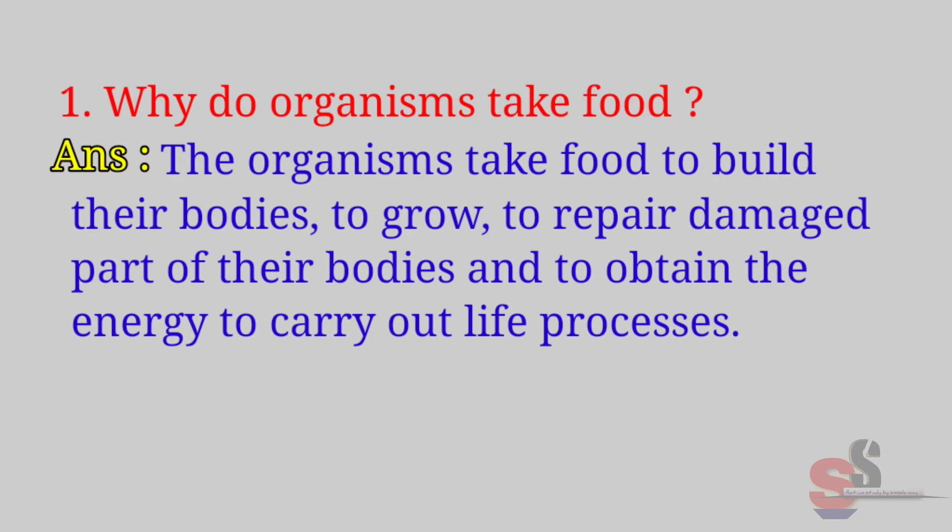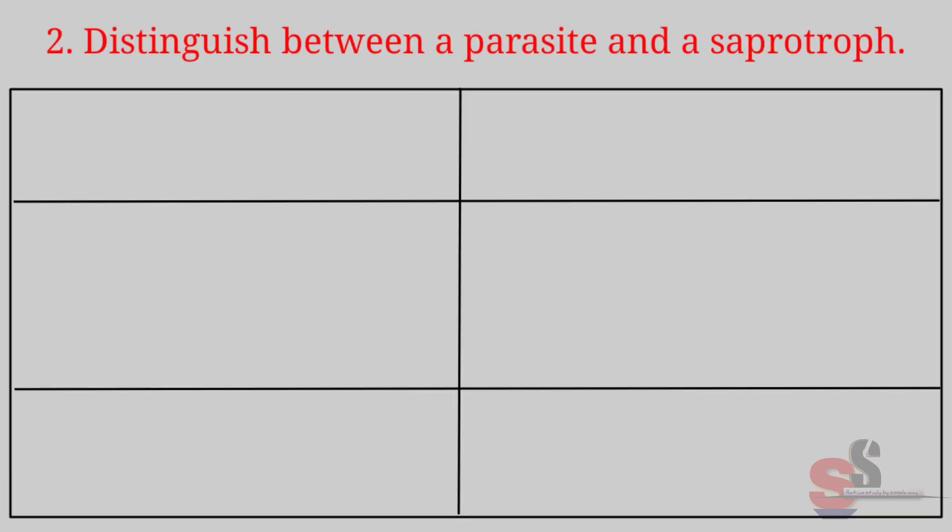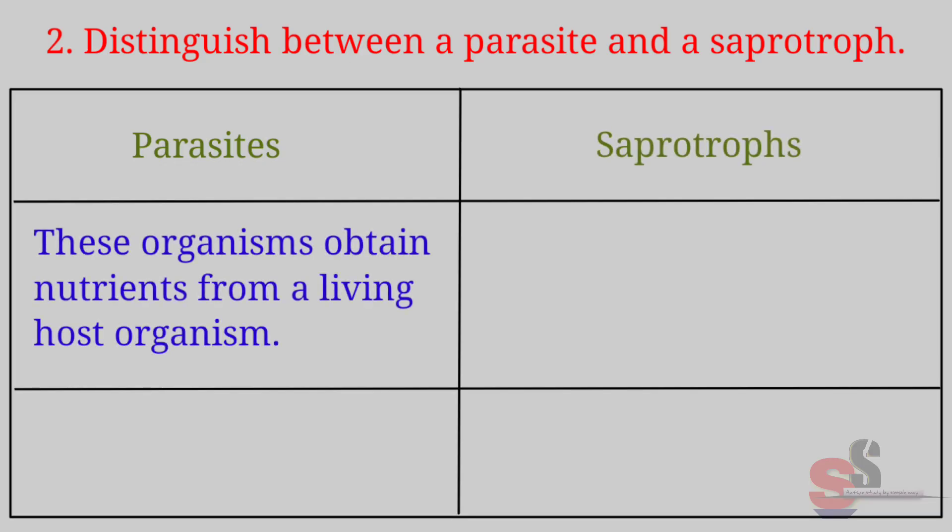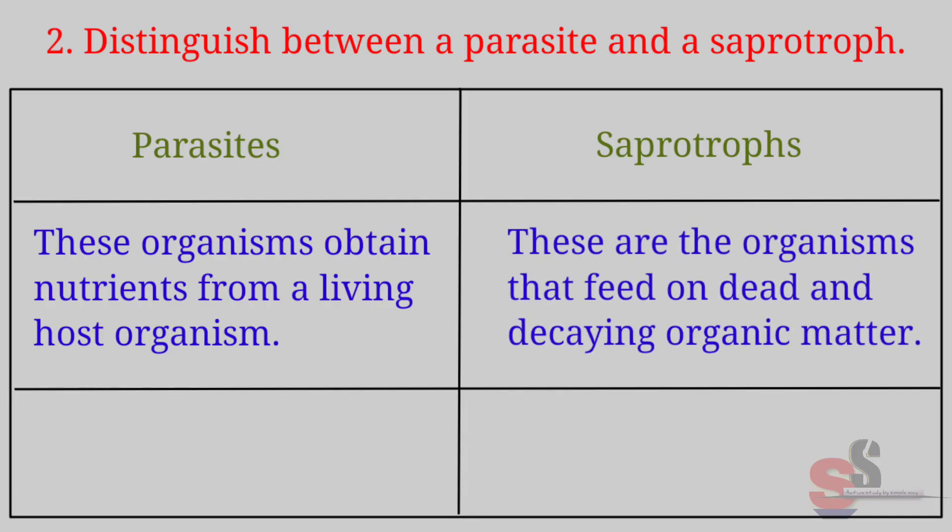Question number 2: Distinguish between a parasite and saprotrophs. Parasites: These organisms obtain nutrients from a living host organism. Saprotrophs: These are the organisms that feed on dead and decaying organic matter.